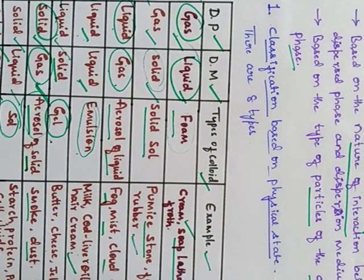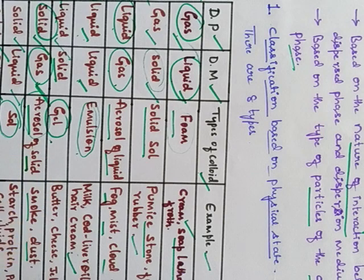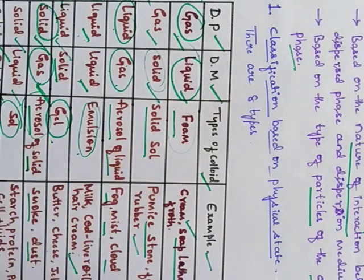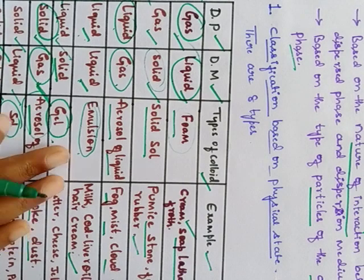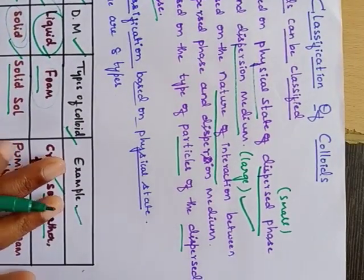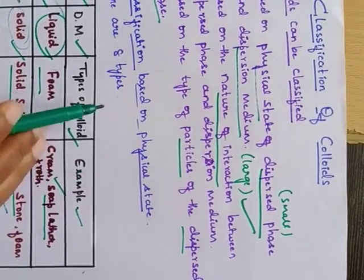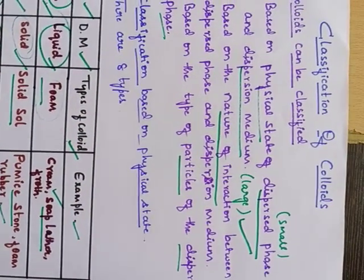This table summarizes the classification of colloids based on physical state of dispersed phase and dispersion medium, with types such as foam, solid sol, aerosol, emulsion, gel, and sol along with their respective examples. Any one of these can be asked in an examination, so you should practice this table. The second and third classifications — based on the nature of interaction and type of dispersed phase particles — will be studied in the next session.